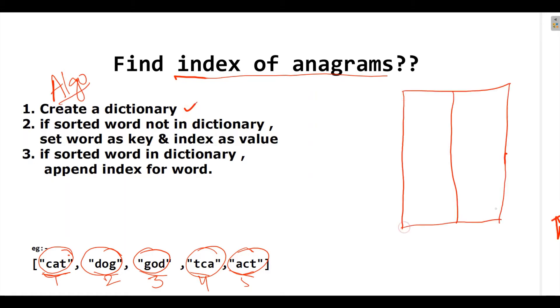So, I will create a dictionary or if I talk in a language of data structure, it is hash map where we have a key and a value. In key, I will take the sorted word.